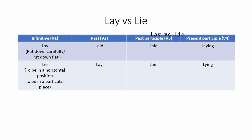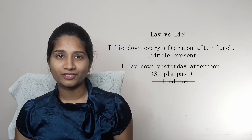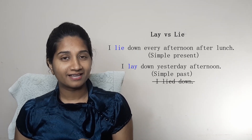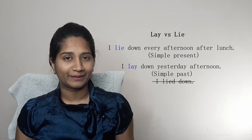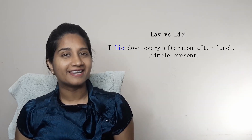The verb lie has two meanings. To lie down is to be in a horizontal position or to be in a particular place. The verb forms are lie, lay, laying, and lying. They are never followed by an object. For example: I lie down every afternoon after lunch. I lay down yesterday afternoon. The 'lay' here is the past form of lie — we do not say 'I lied down.' The past form of lie down is lay down.